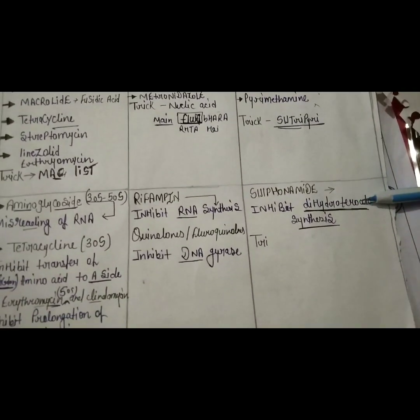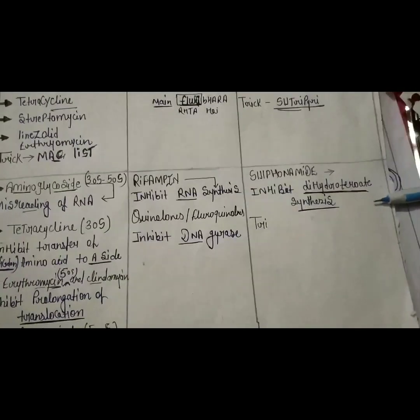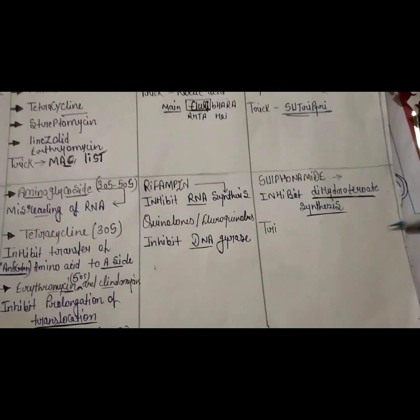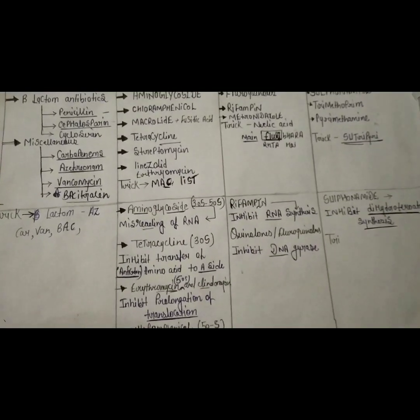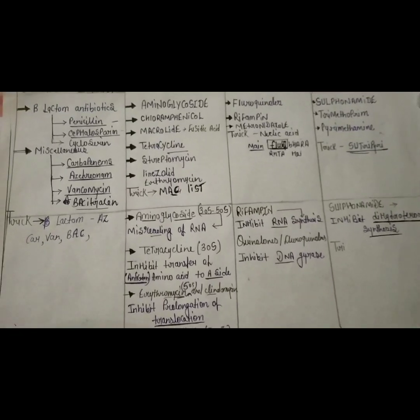Sulphonamide inhibits dihydropteroate synthesis. I will post these mechanisms of action in more detail in my next video. Thank you so much.